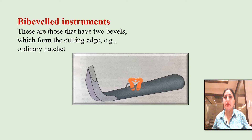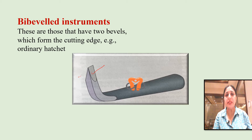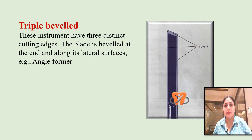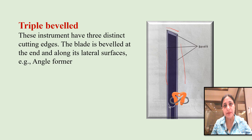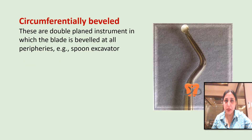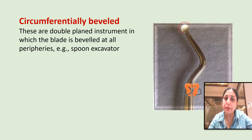Double beveled instruments are those that have two bevels forming the cutting edge — one bevel on each side. An example is the ordinary hatchet, where the two bevels meet at one point to form a sharp edge. Triple beveled instruments have three distinct cutting edges: the instrument is beveled at its end, which is the primary cutting edge, and also beveled along its lateral surfaces, which are the secondary cutting edges. An example is the angle former. Circumferentially beveled instruments are double-planed instruments in which the blade is beveled all along its periphery — for example, a spoon excavator.